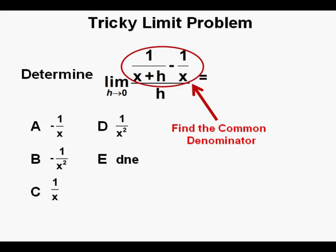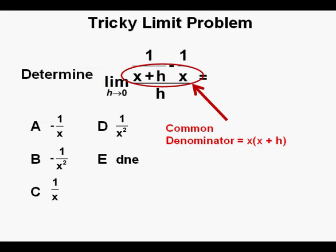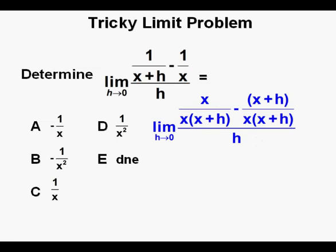The first thing we'll do is find the common denominator of this encircled numerator. And the common denominator will be x times quantity x plus h. And here is the expression with the common denominator of x times quantity x plus h employed.